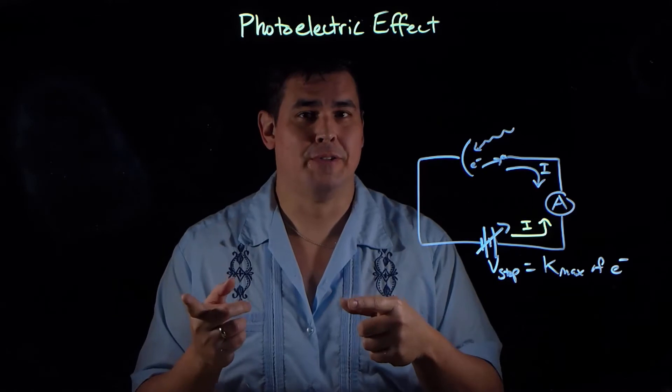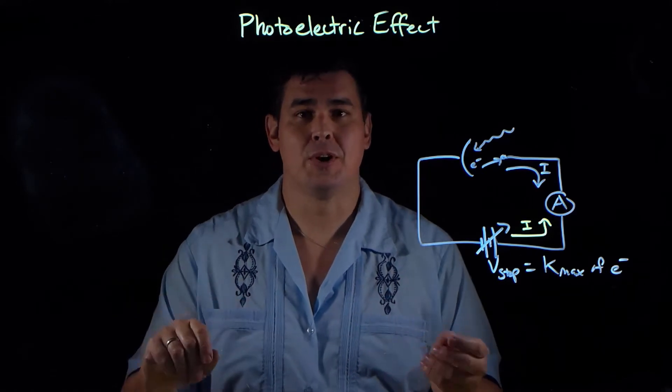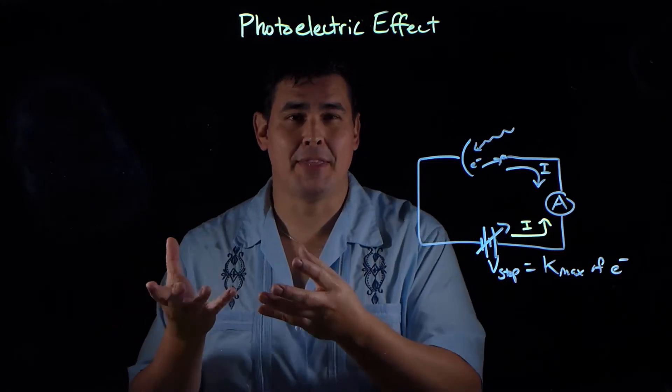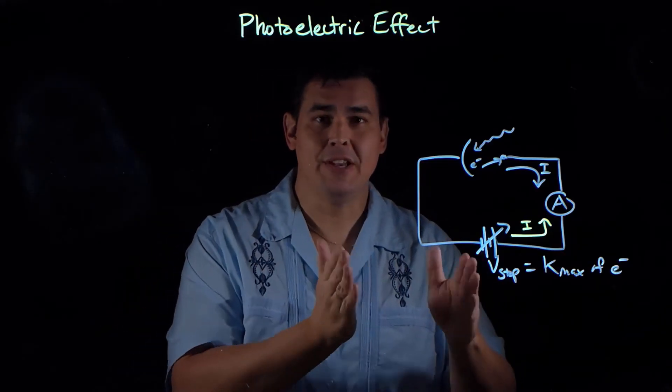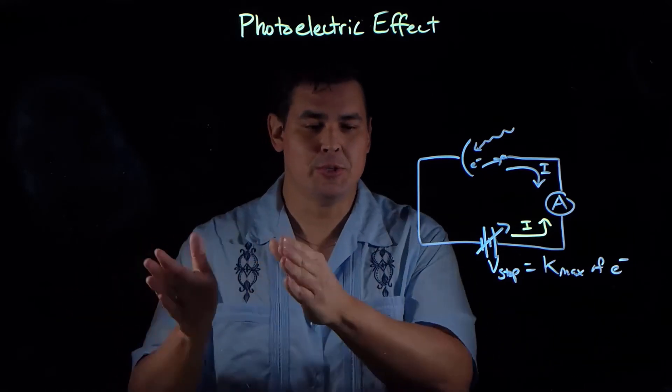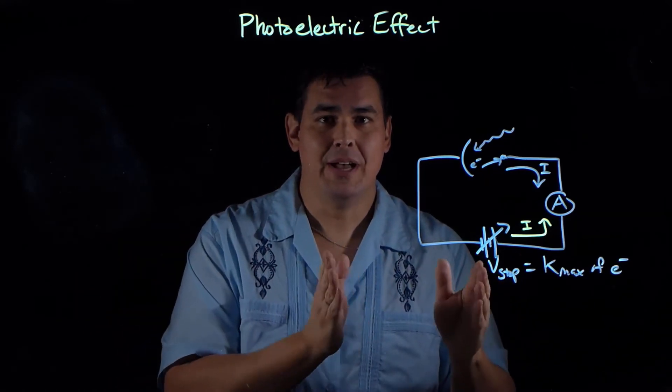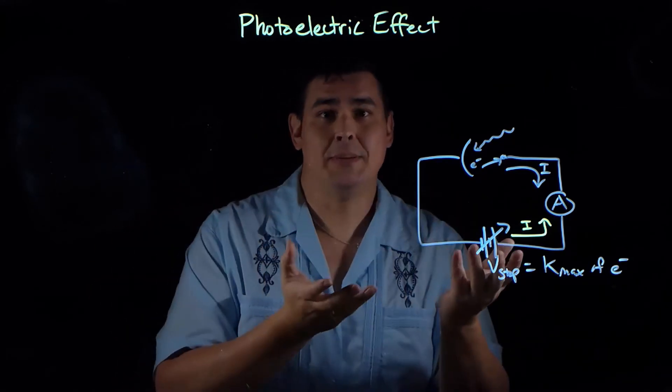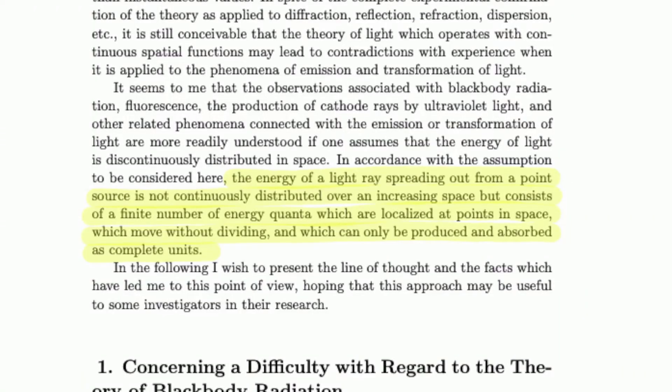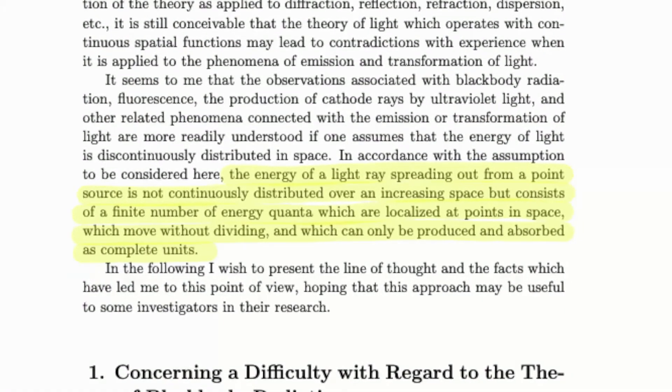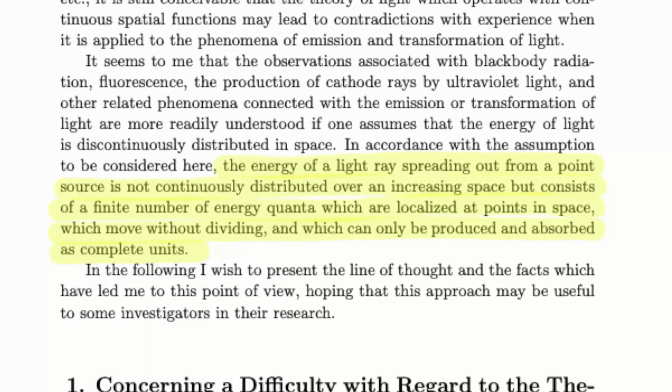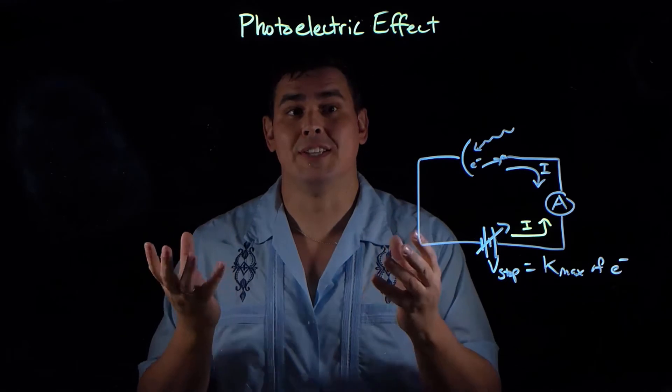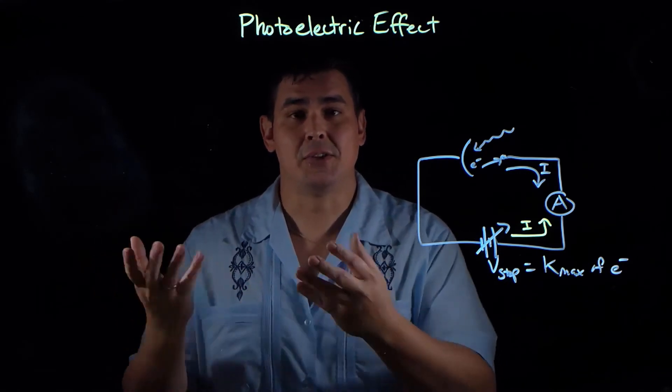So Einstein's approach to solving this problem was different. Einstein took what's called a heuristic approach. And a heuristic approach is basically where you're going to use a method, and that method is unproven, but you're going to hope that it works. And if it does work, you'll go back and fix it later. You're just using it as a method to get to the solution. So Einstein took Planck's idea and took the next, what seemed to him, logical step. So he basically said, light consists of a finite number of energy quanta localized at points in space and moving without dividing and can only be produced and absorbed as complete units, which is what we call today photons. He's describing a photon.